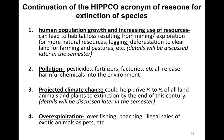Projected climate change could drive a quarter to a half of all land animals and plants to extinction by the end of this century. Over-exploitation includes over-fishing, poaching, and illegal sales of exotic animals as pets. We will discuss over-fishing in a later chapter.